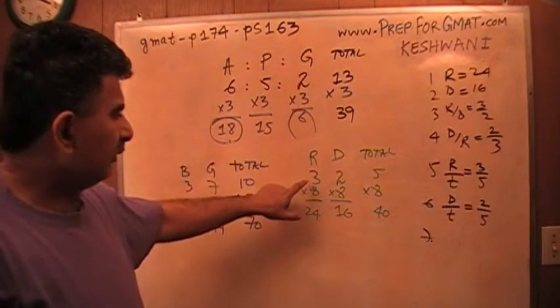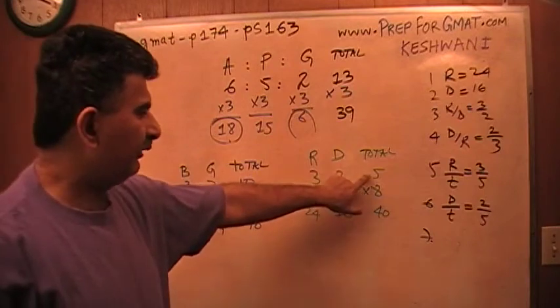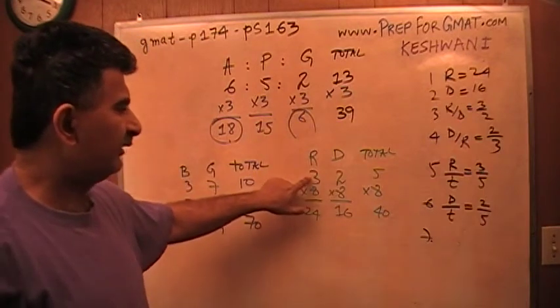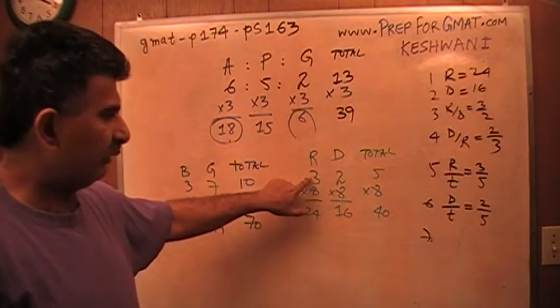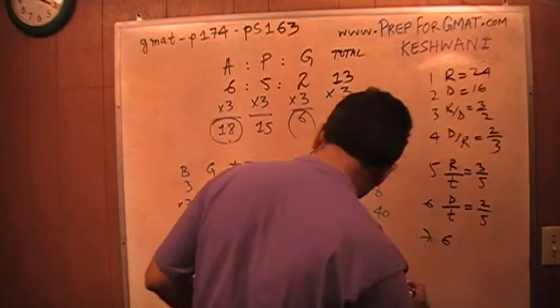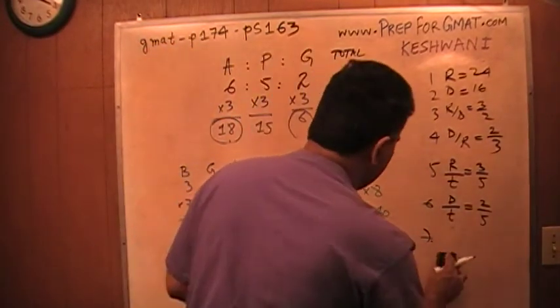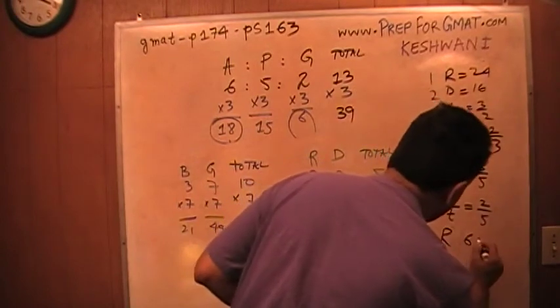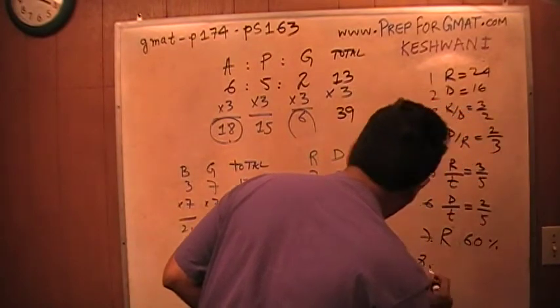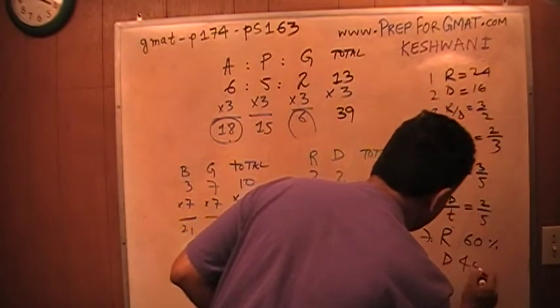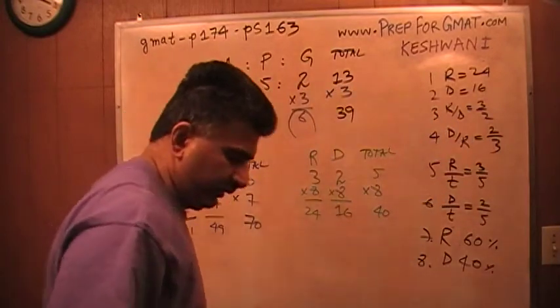What percentage of the total flowers are roses? Well, you just told me that roses are 3 fifths of the total flowers, 3 out of every 5. So that means 3 fifths of all the flowers are roses. The answer is 60%. What percentage of the flowers are daffodils? The answer is 40%. Let me see the camera again one more time.